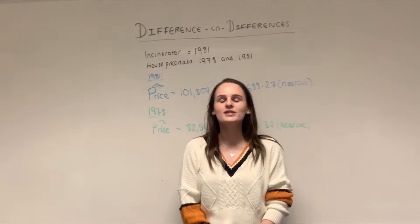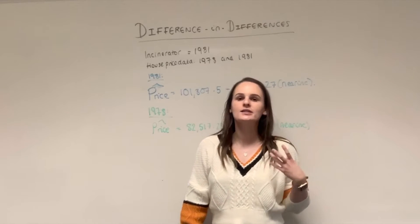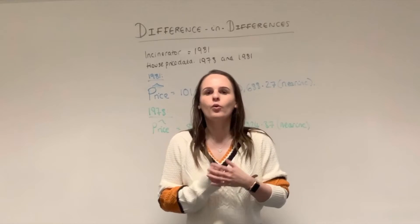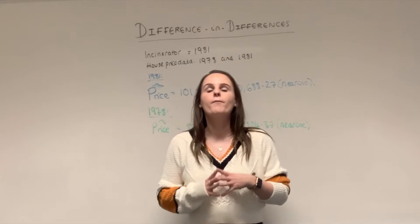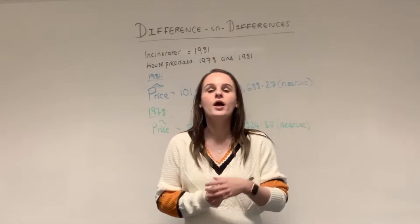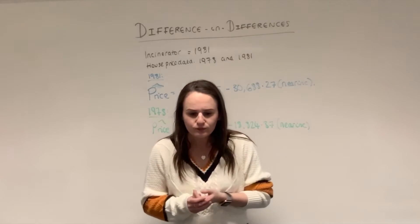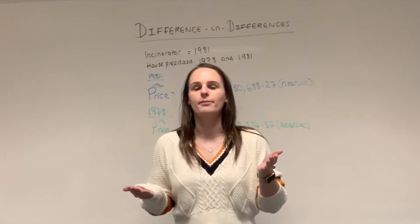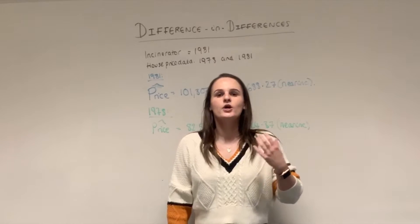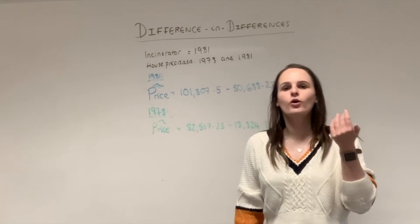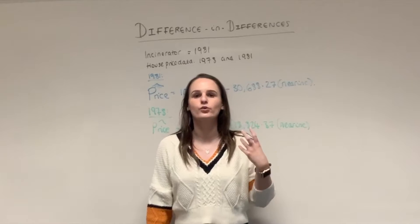Welcome back. Today we're going to be focusing on something called a difference-in-differences model, which you'll see quite a lot in introductory econometrics. We use it when a policy or some event has come into effect — or in our example, when something has been built — and you have data both before and after. The example we'll use is from Wooldridge, about an incinerator being built and its effect on house prices.